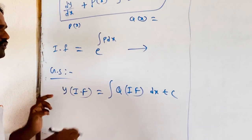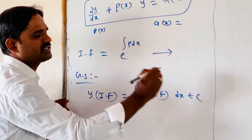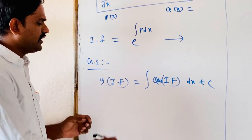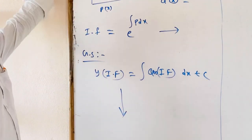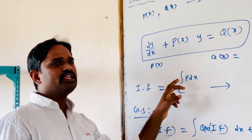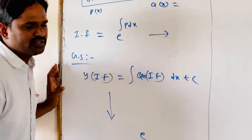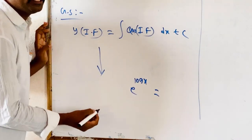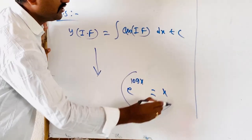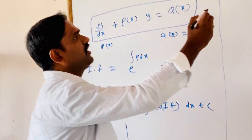The general solution is: y·IF = ∫q(x)·IF dx + C. By integrating the right-hand side and substituting the integrating factor, we find the general solution. We also note that e^(log x) = x, which we use when the integrating factor takes the form e^(log of something).